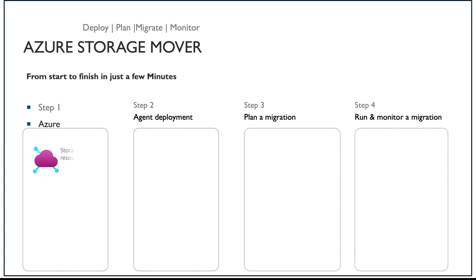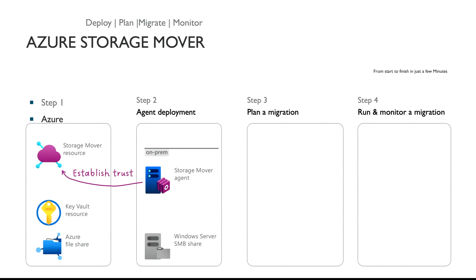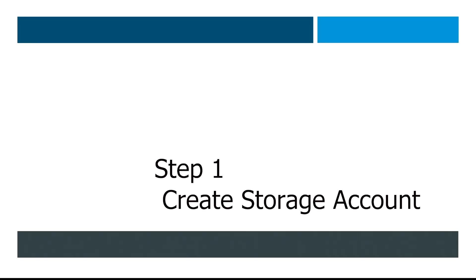The first thing you have to do is create your Azure Storage Mover inside of a storage account. Then you set up your Key Vault with all your secrets. Then you set up an Azure File Share. Then you deploy the agent to an on-prem Hyper-V or VMware system. That agent is going to connect to either a Windows SMB share, a NAS, or a Linux system — in my demo I use a Linux Raspberry Pi set up as a NAS. Once you create the agent, you establish a trust to the Azure Mover. Then you go to the migration, specify all the parameters, run the job, and monitor the migration.